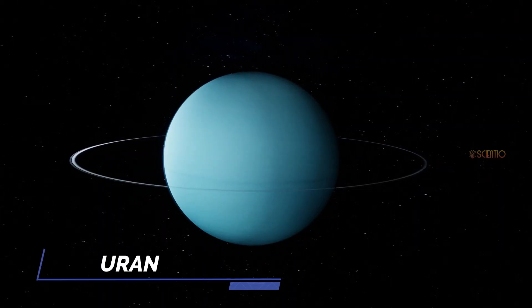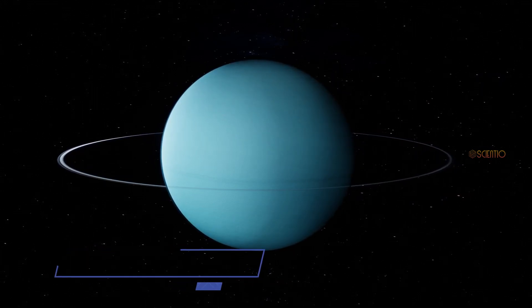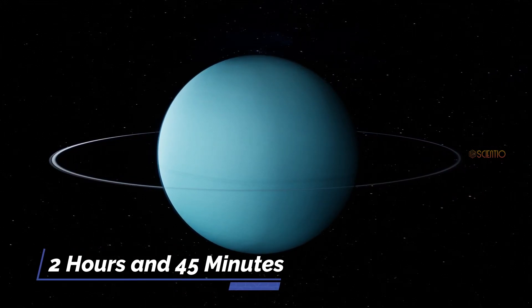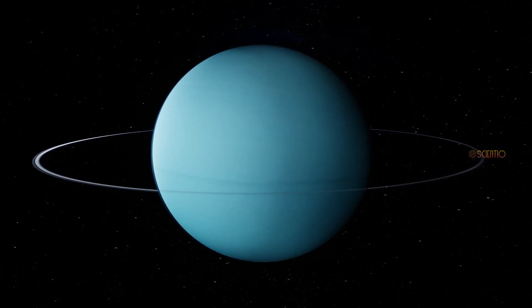Uranus. The seventh planet from the sun, Uranus, is approximately 2 hours and 45 minutes away. Here we'll witness its unique blue-green color and its numerous moons.